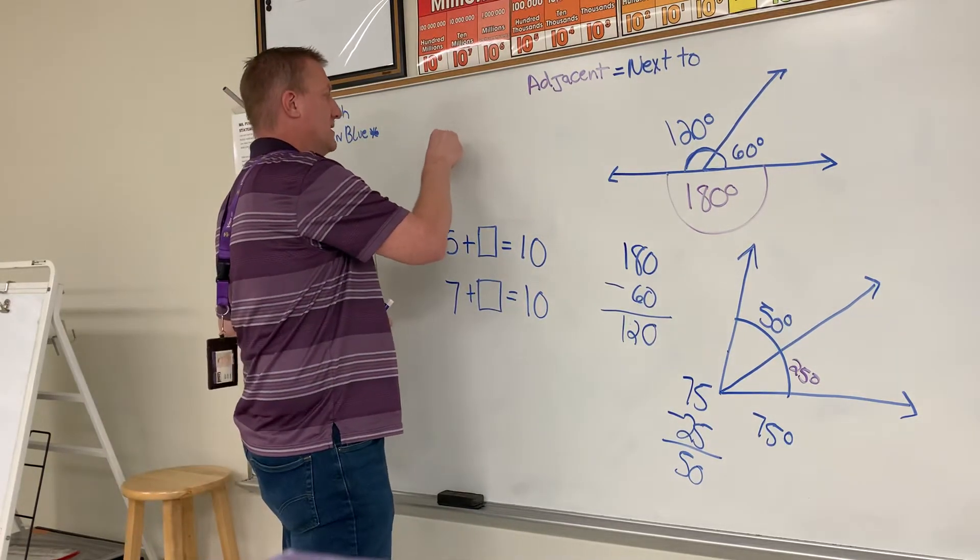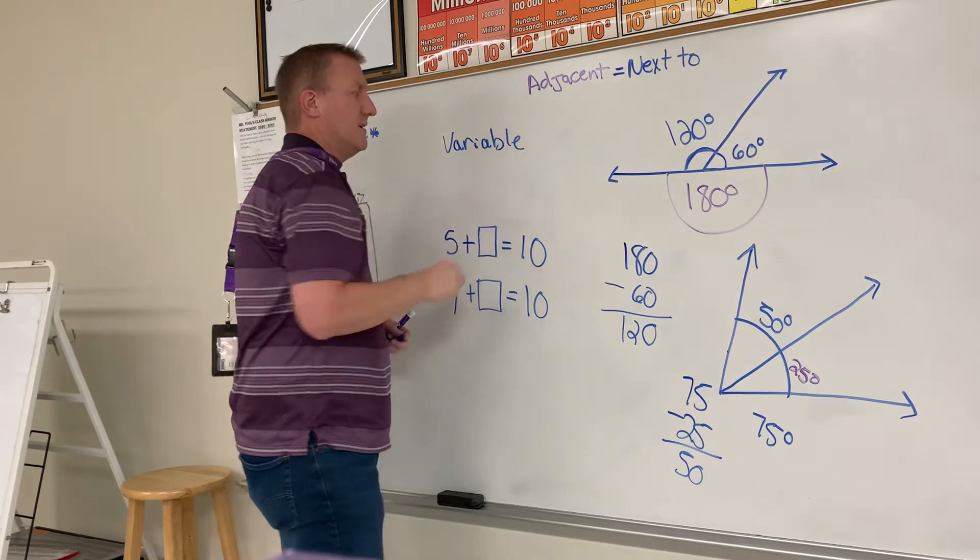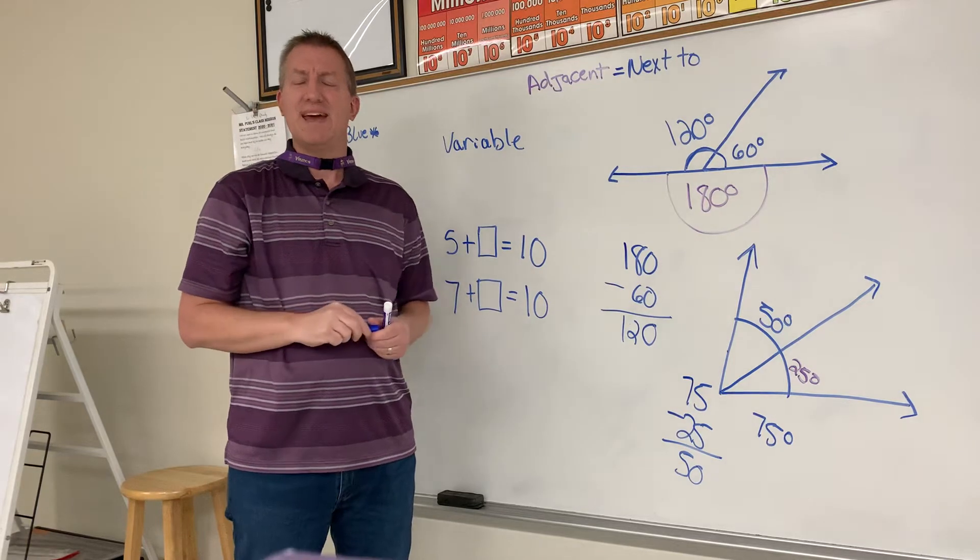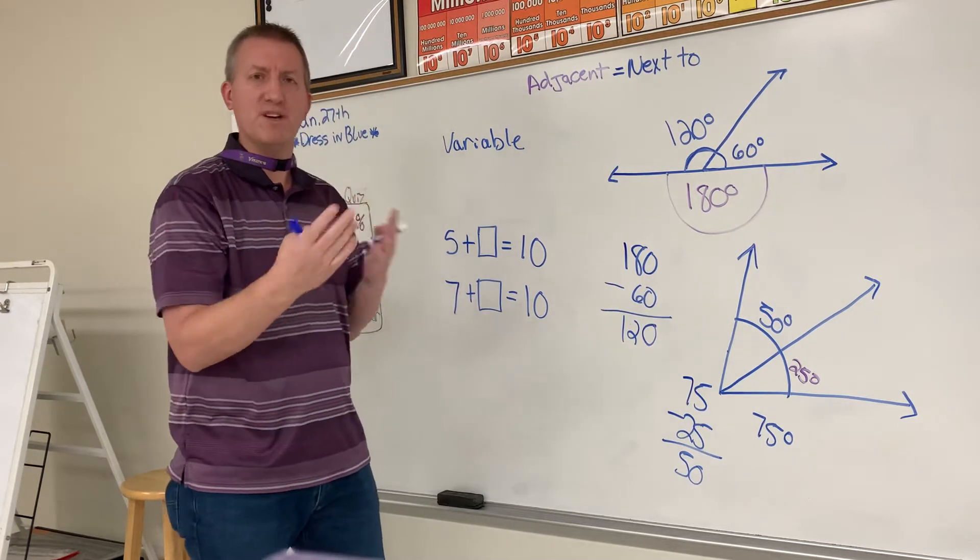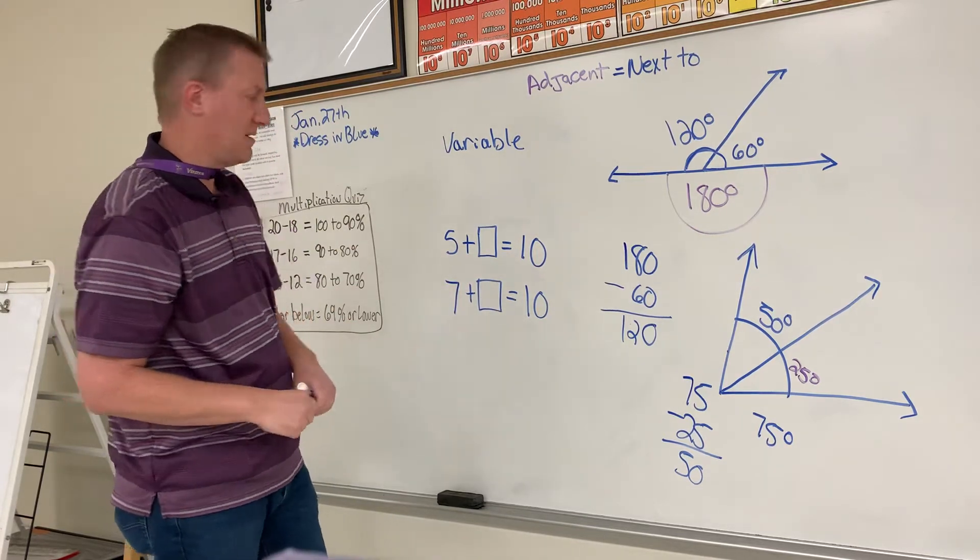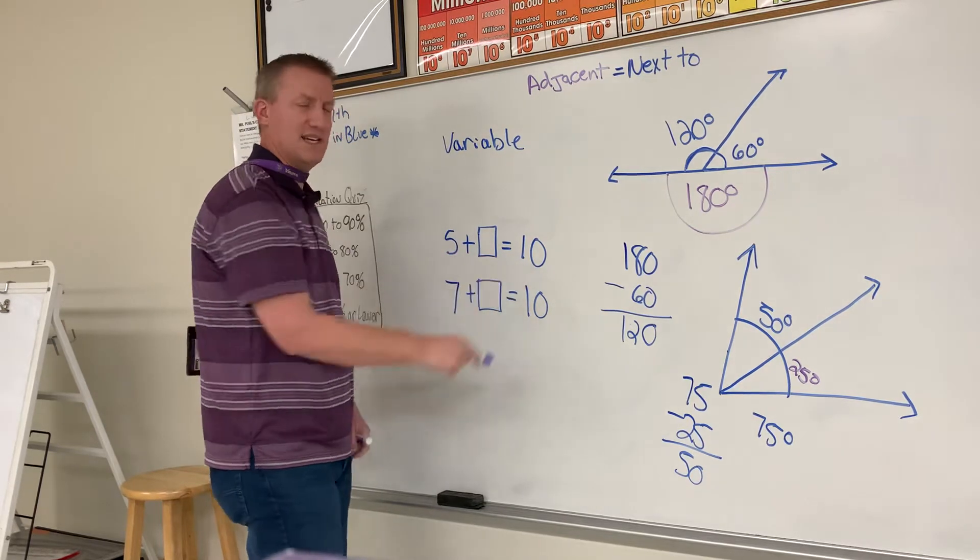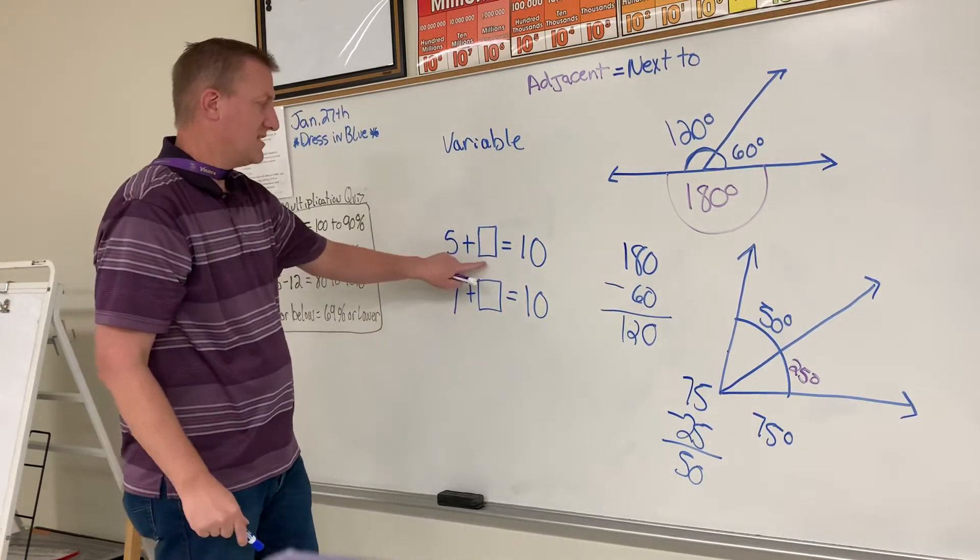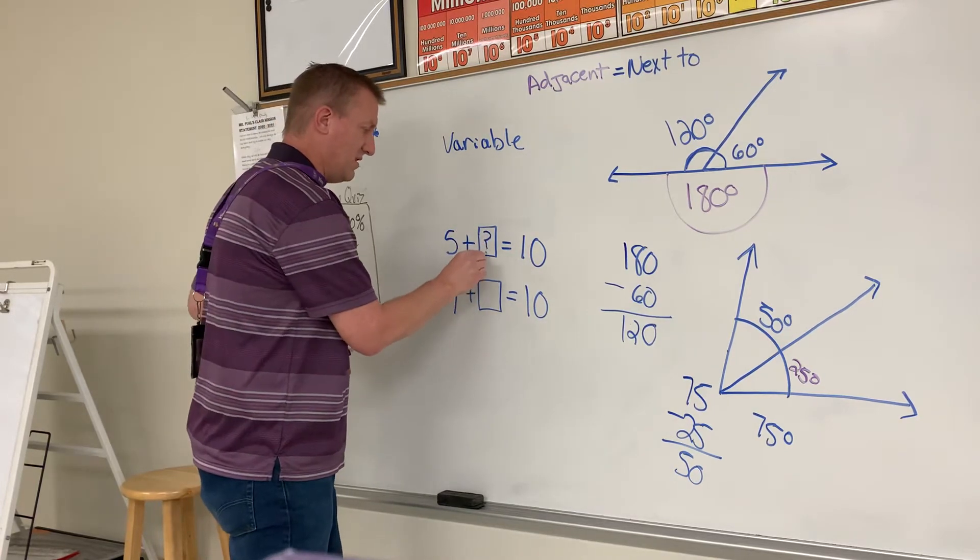Right here is something we call a variable. Variables are things that change in a problem. Okay, so the variable could change, but you're still going to complete the problem. So you can do 5 plus blank is 10. This is our variable right here. This is what we're looking for.